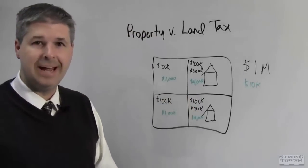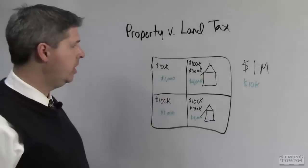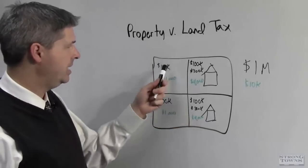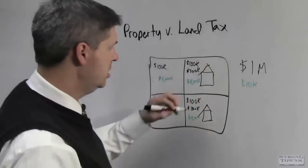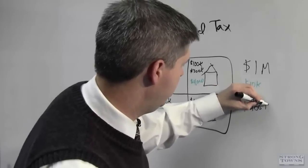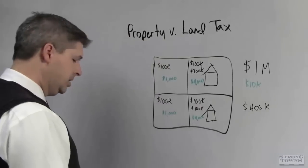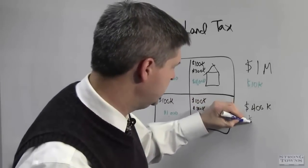Now, let's look at a land tax. You have the same valuation here but only $400,000 of it is added together for a land tax. Just the value of the land. We ignore the value of the structures. So now you have a total assessed value of $400,000. You still apply that same $10,000 taxes.